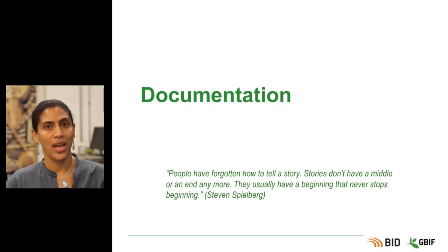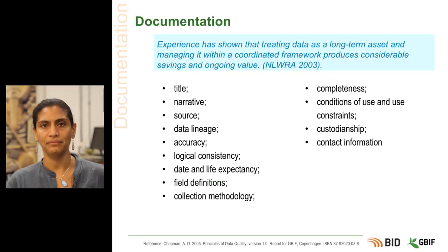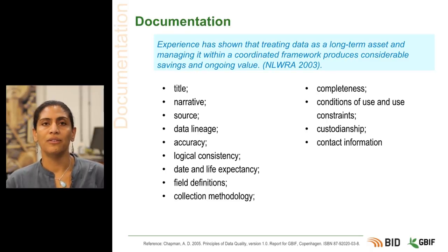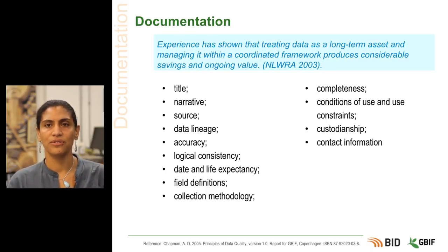What did we aim to do? What did we actually do, and what did we achieve? Documenting accuracy, precision and errors in data is essential if users are to be able to determine the quality of those data for their purposes.